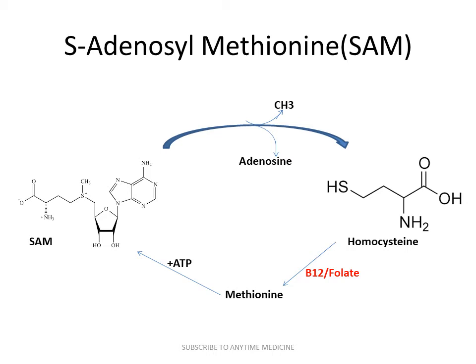Homocysteine converts into methionine with the help of vitamin B12 and folate, and that methionine converts into SAM with the help of ATP. You can see that vitamin B12 and folate are very important for making methionine. If we don't have vitamin B12 or folate, we cannot make methionine and therefore we cannot make SAM.